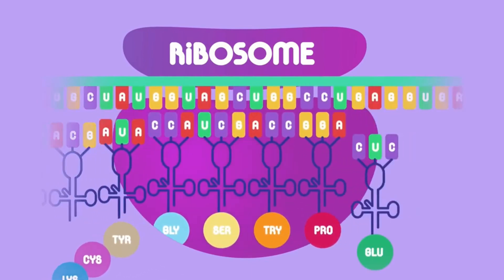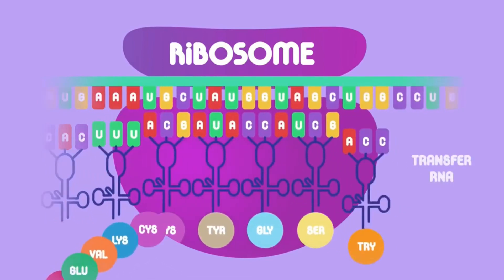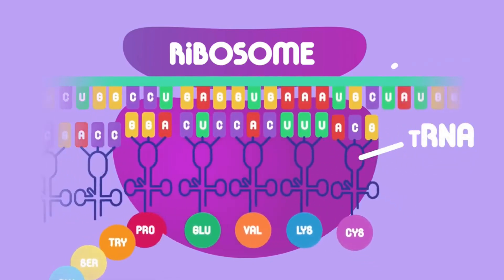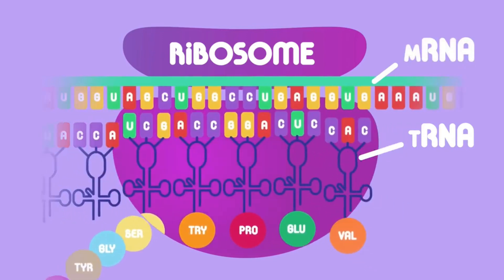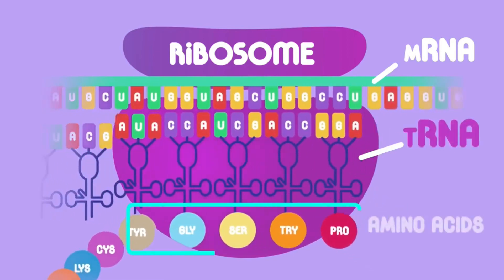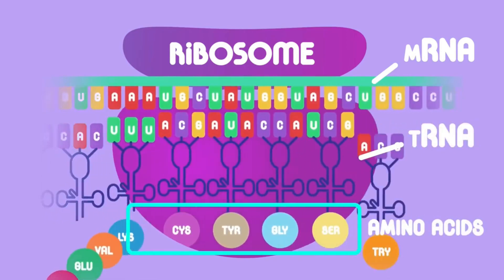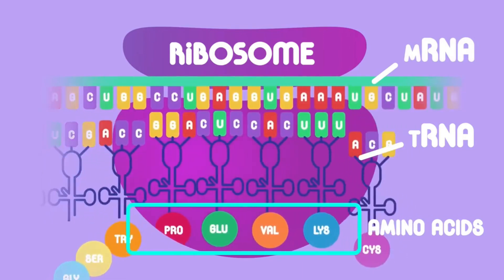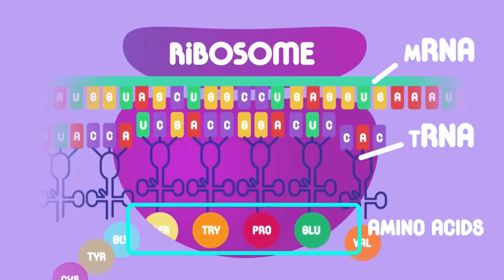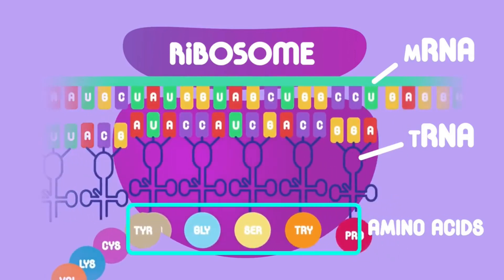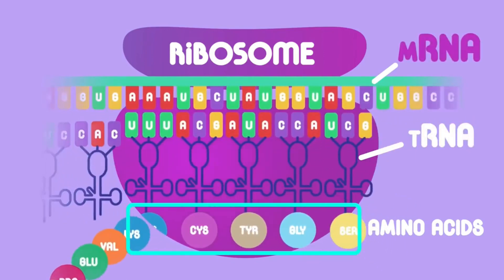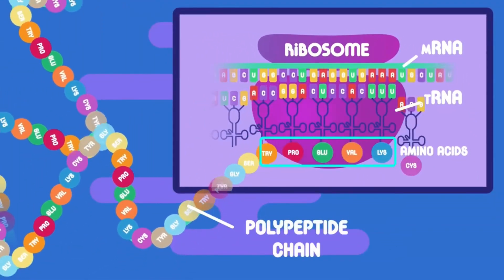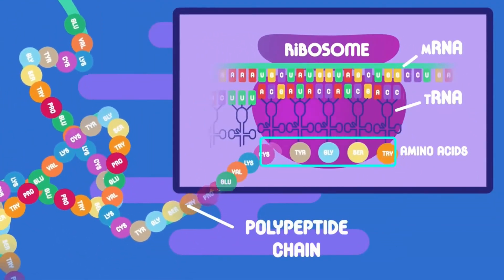Inside the ribosome, transfer RNA, or tRNA, molecules carrying specific amino acids base pair with the mRNA. So the tRNA brings in the amino acids and the mRNA provides the information of the exact order that the amino acids need to be bonded together to ensure that the correct protein is made. As more and more tRNAs match up with the mRNA, the amino acid chain becomes longer and longer, and eventually the polypeptide chain will form into the protein.